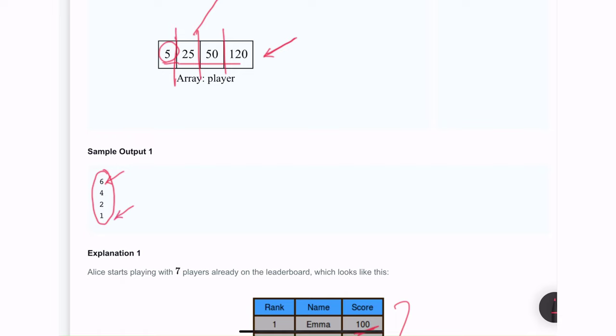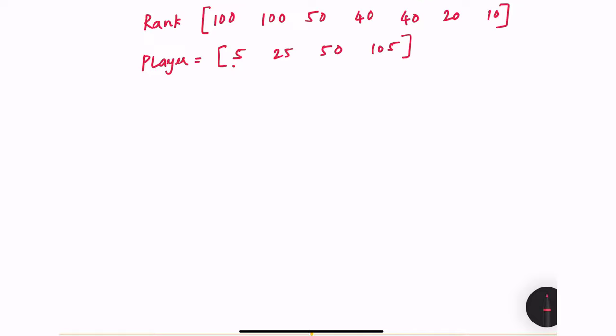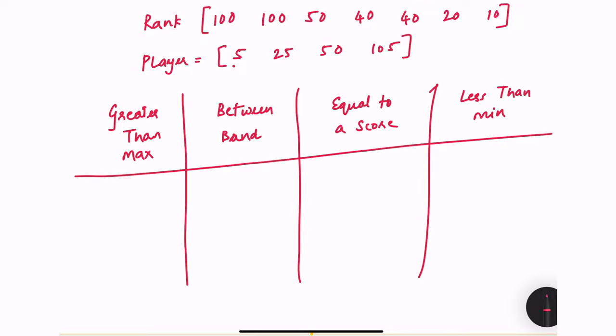I hope you were able to understand the problem statement. Let's switch to the whiteboard and talk about how this can be solved. Before we dive into the solution, I want to highlight four different scenarios that could appear. The first one is: the player's score is greater than the maximum score any player has ever scored — in that case the rank will always be 1.